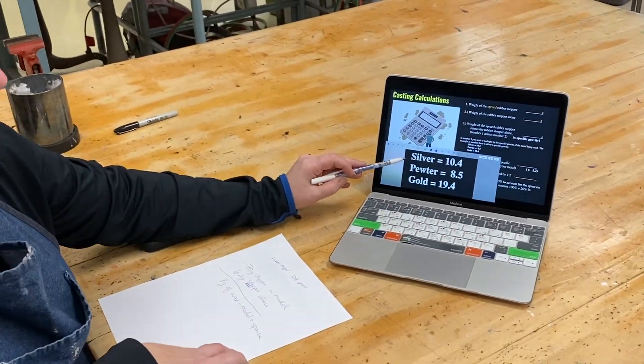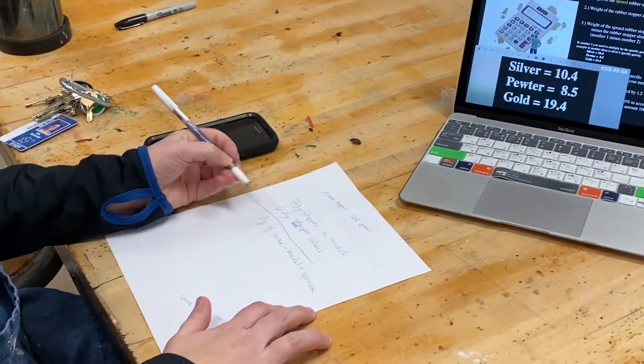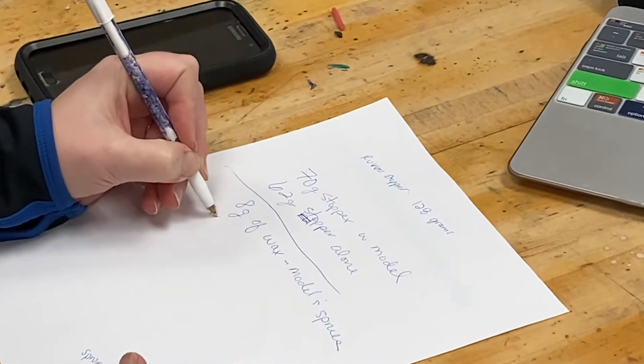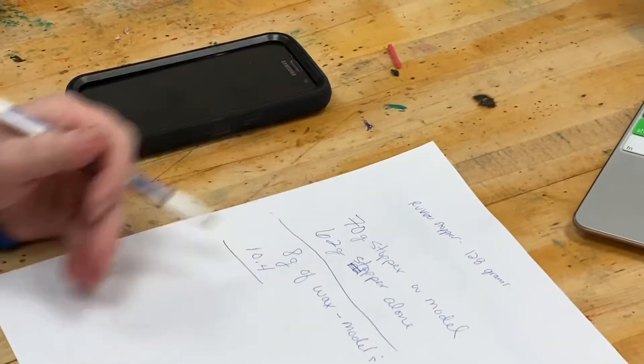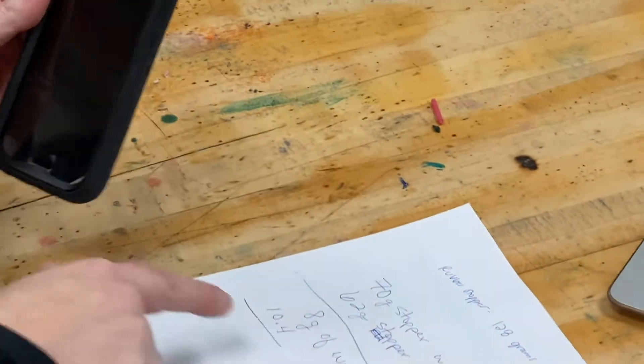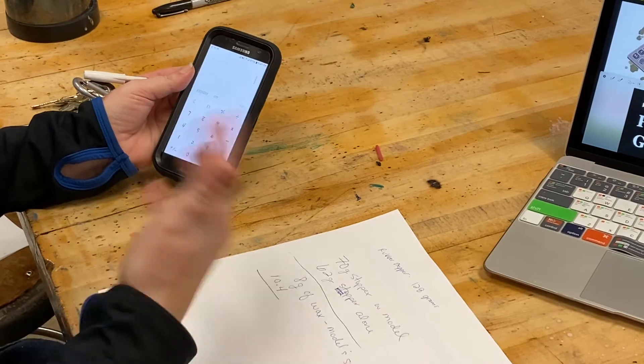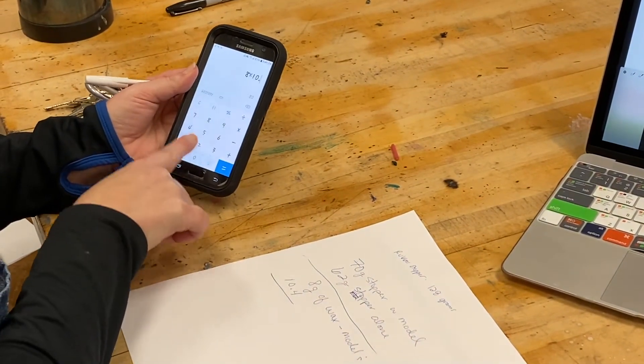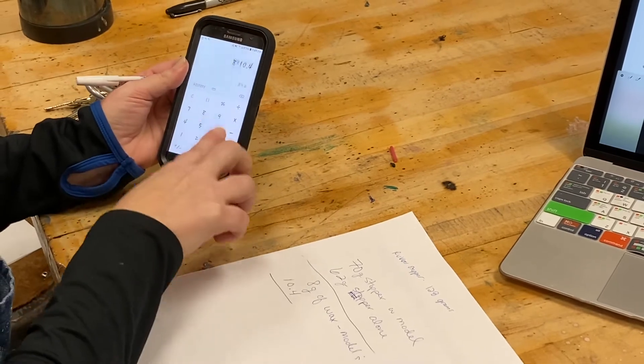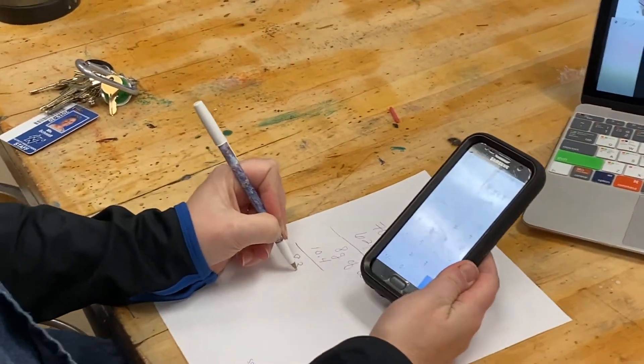So I'm actually going to use silver for this example. So I'm going to take my 8 grams and I'm going to multiply it times 10.4. And I'm just writing this down so that I've got proof of my work. That's actually an atomic weight that they're using. So I need to take 8 and multiply it times 10.4, which gives me 83.2.